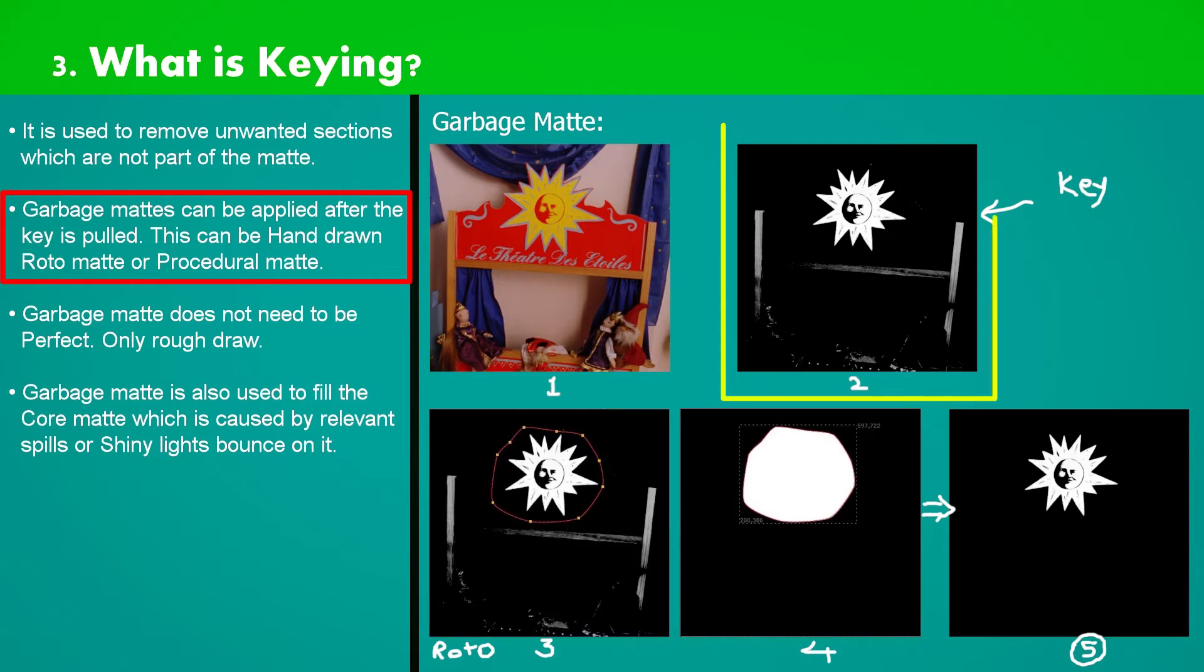In this example we have extracted our mat using certain keying methods. But note that while extracting the key of this sun sign, various unwanted sections are also covered because the mix of somewhat same color and spill.